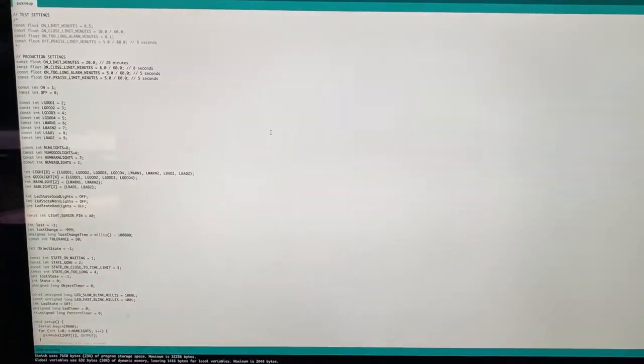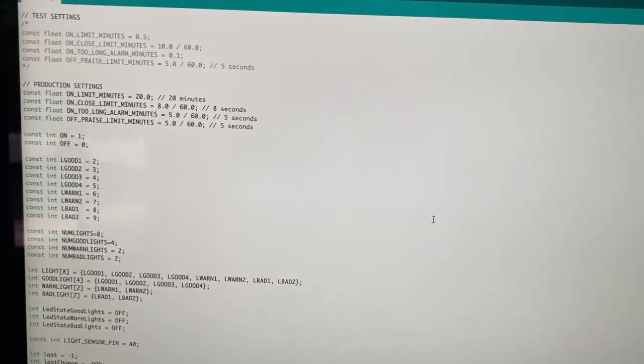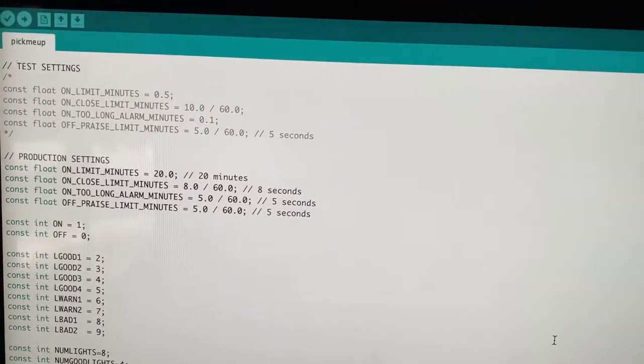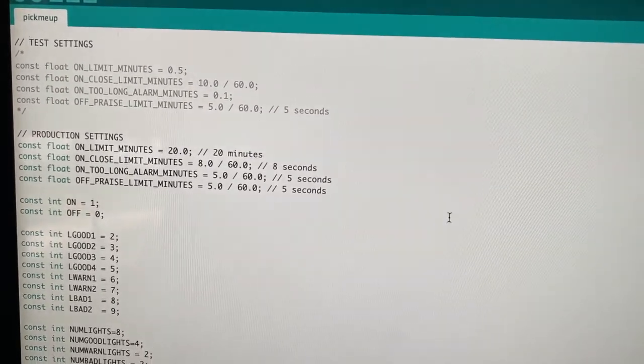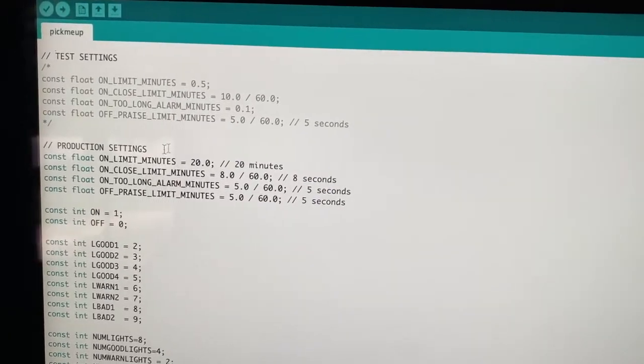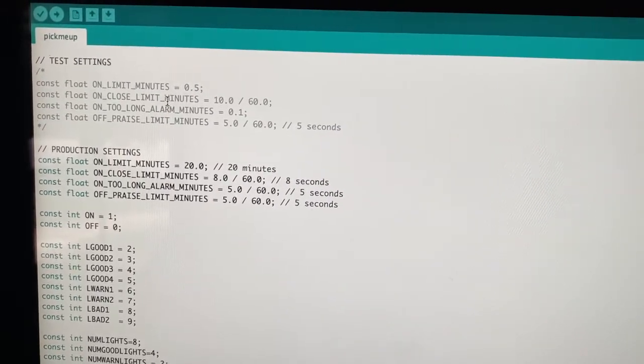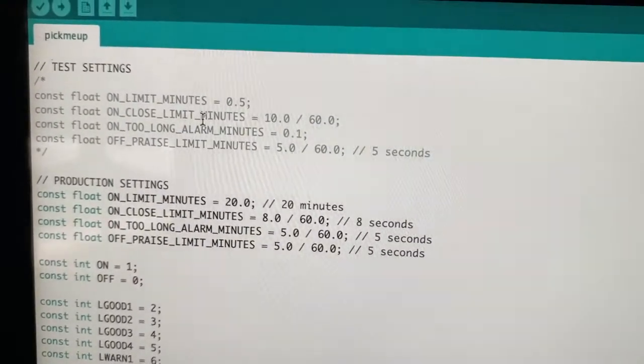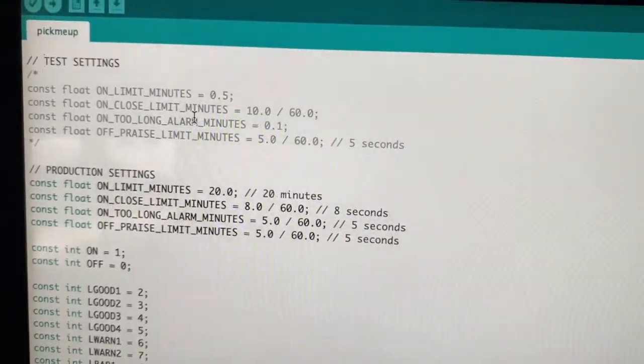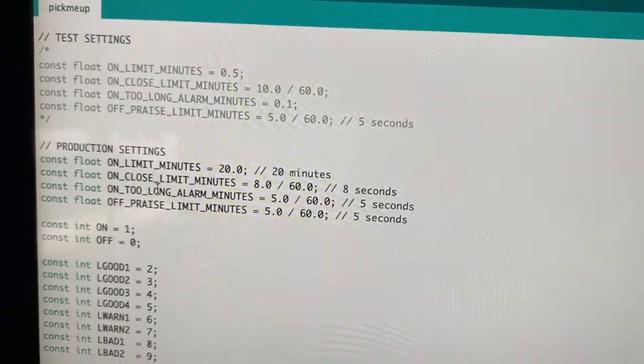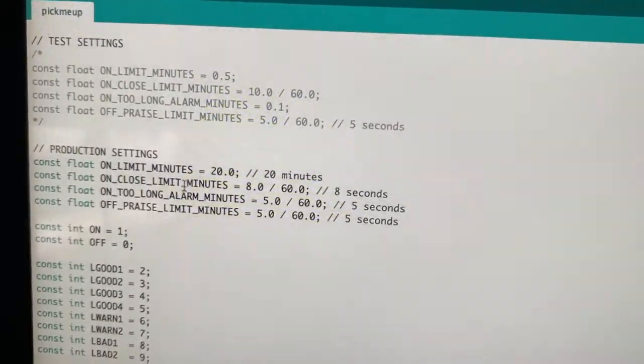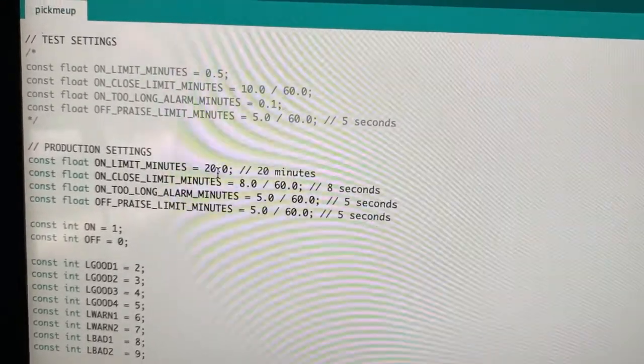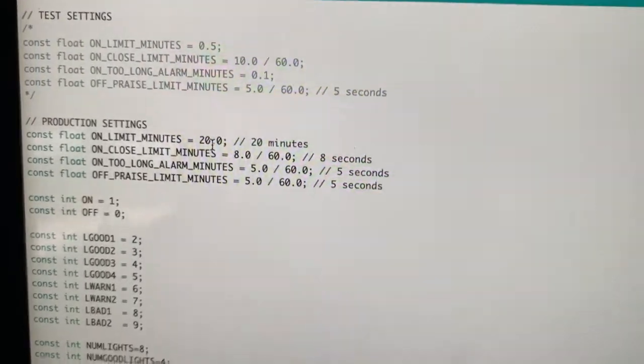Okay, so here's the software for the pick-me-up, and I'll take you through some of the highlights. So I have some test settings up here and some production settings. The test settings are basically setting times, so I didn't have to sit there for 20 minutes each time to test it out. The production settings down here are set for 20 minutes total, so I need to drink every 20 minutes.